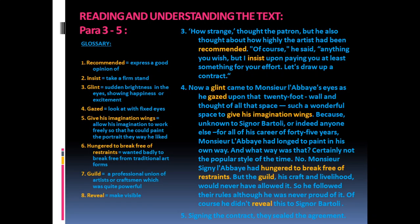Paragraph 3 to 5. Glossary: Recommend — express a good opinion of. Insist — take a firm stand. Glint — sudden brightness in the eyes showing happiness or excitement. Gazed — look at with fixed eyes. Give his imagination wings — allow his imagination to work freely so that he could paint the portrait the way he liked. Hunger to break free of restraints — wanted badly to break free from traditional art forms.